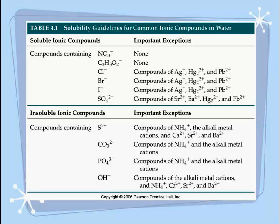The bottom half of the table on the left side shows the insoluble compounds. Compounds that have those four anions in them will generally be insoluble. There are exceptions — if you have a carbonate ion bonded to an ammonium ion, that will be soluble. Ammonium is an exception to all of them. You also have the alkali metal cations — lithium, sodium, potassium — and if any of those are bonded to sulfide, carbonate, phosphate, or hydroxide, they will be soluble.